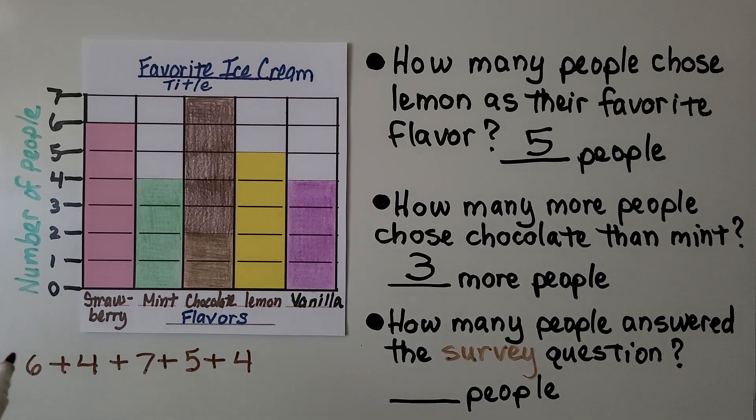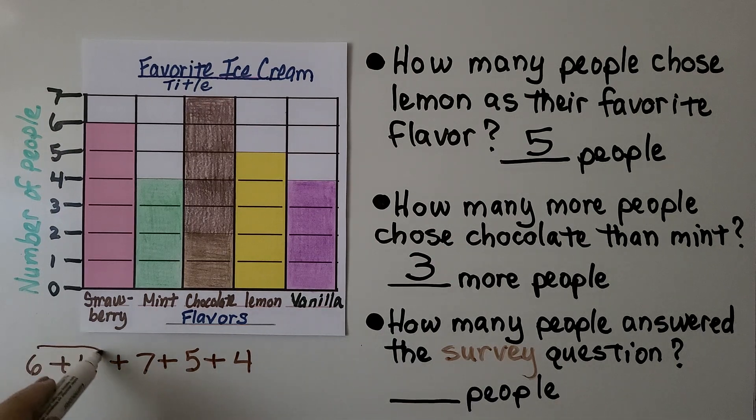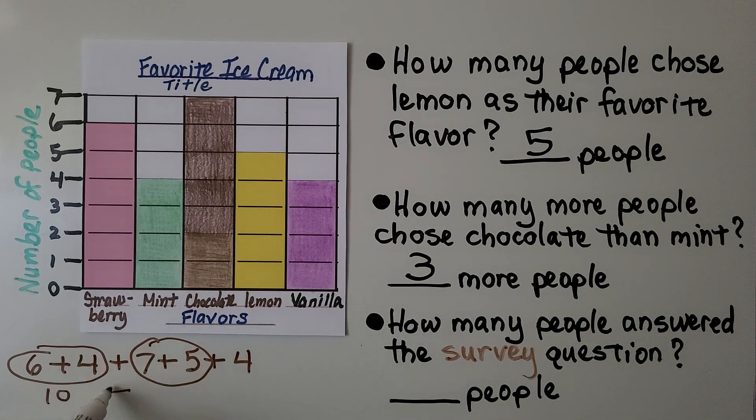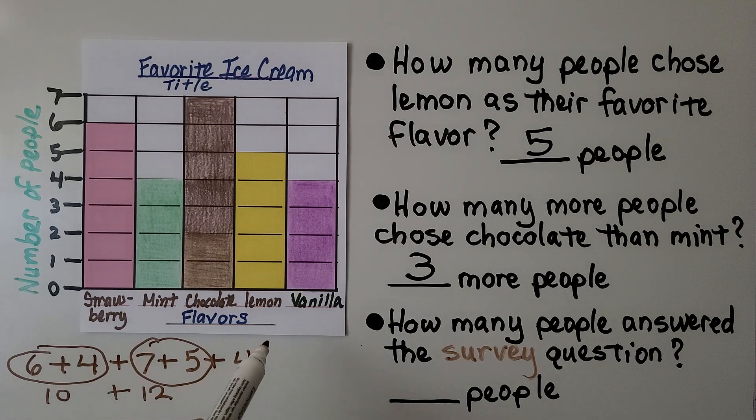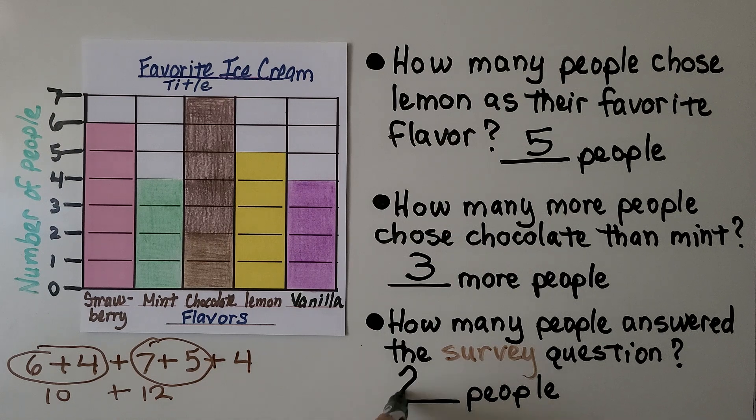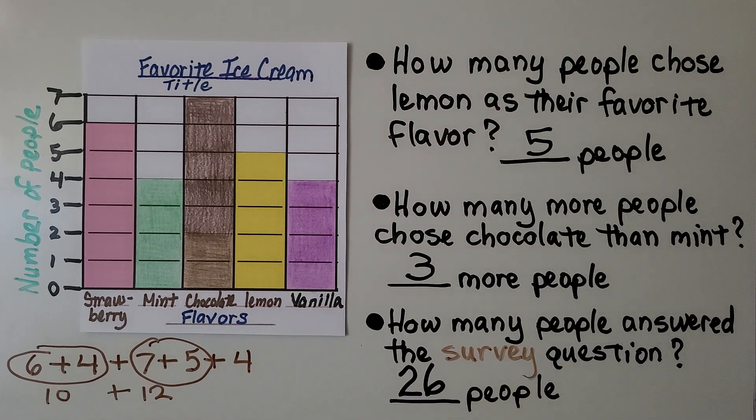So we have six plus four plus seven plus five plus four. Six plus four is 10. And seven plus five is 12. Now we have 10 plus 12. Well, 10 plus 12 is 22. And we have this four, 22 plus four is 26. That means 26 people answered the question for the survey.